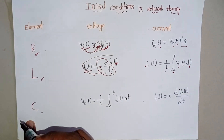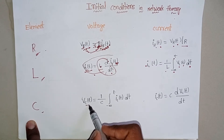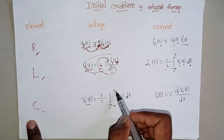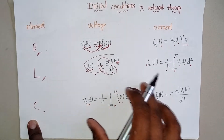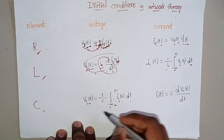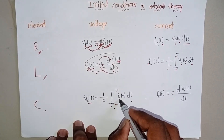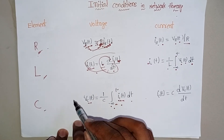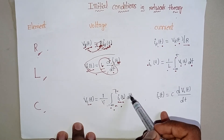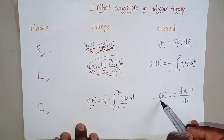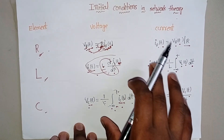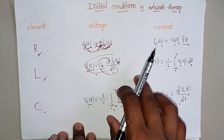For the capacitor, the voltage across the capacitor is Vc(t) = (1/C) × integral from −∞ to t of Ic(t) dt. From this equation, the current flowing through the capacitor is Ic(t) = C × d/dt × Vc(t). This covers currents and voltages in RLC elements.